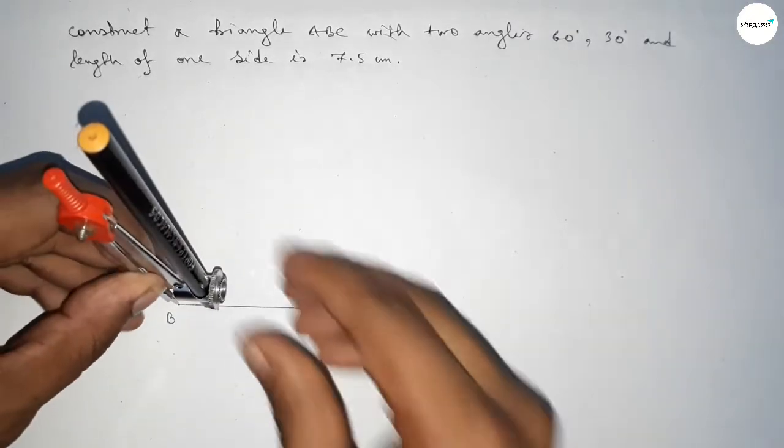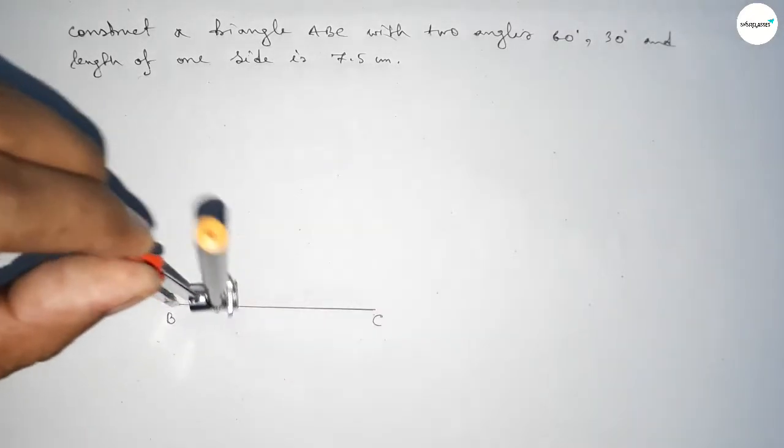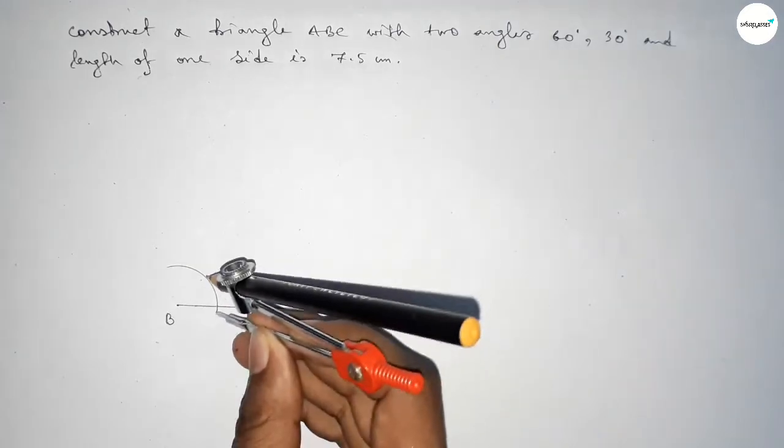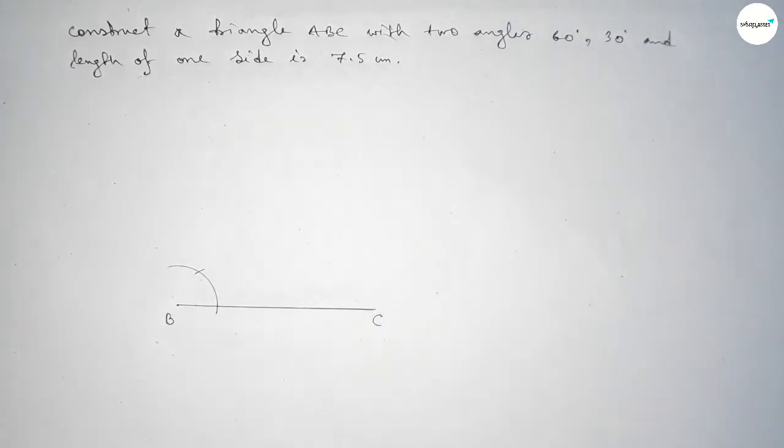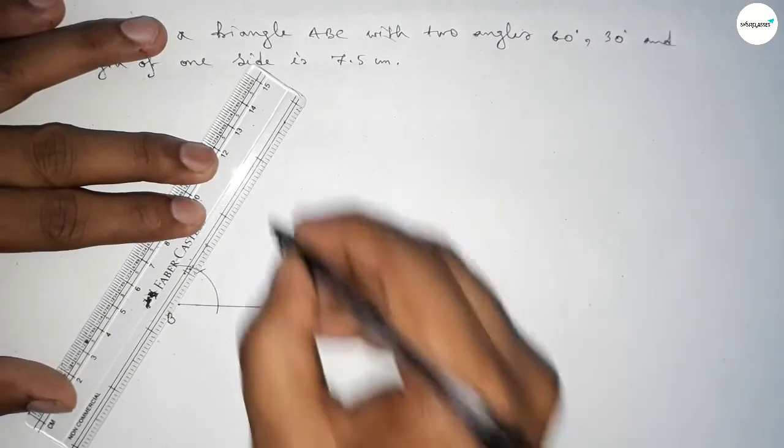Putting the compass here and taking any length, drawing an arc. With the same length, putting the compass here and cutting here so both curves intersect at a point. Now joining this to get a 60 degree angle.